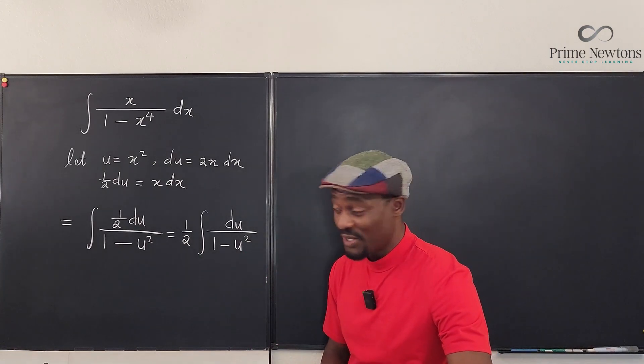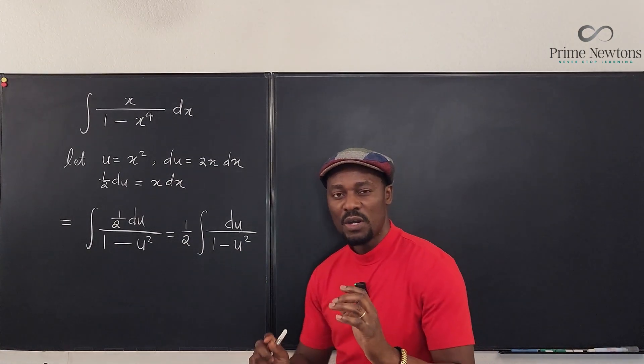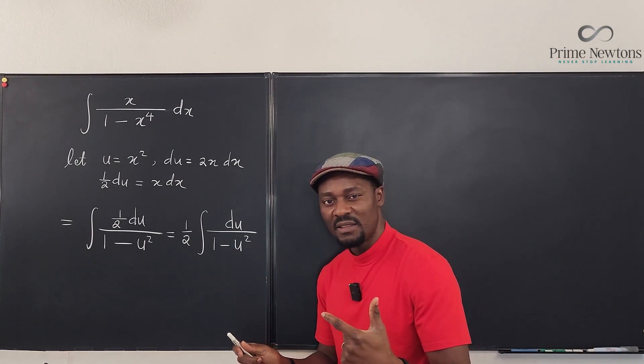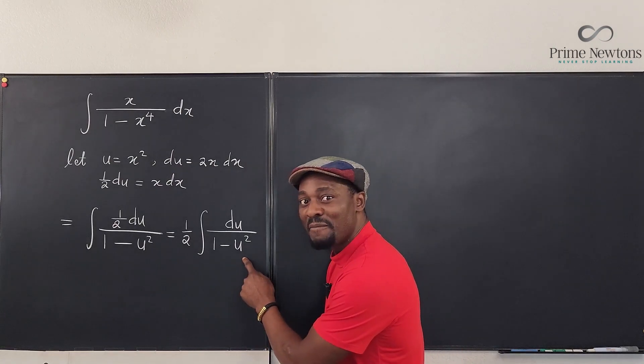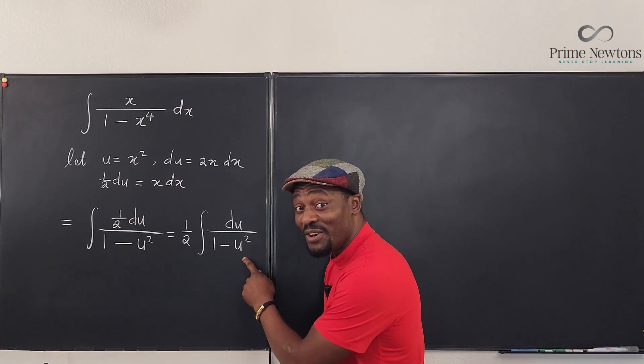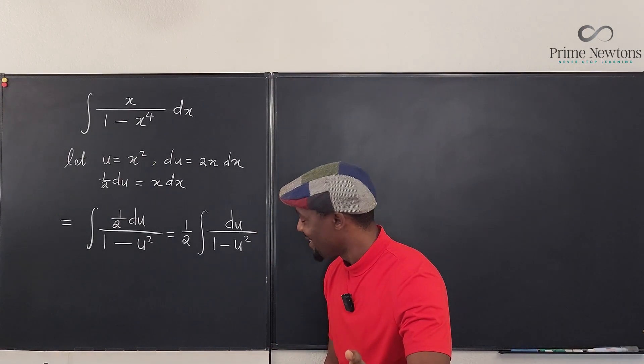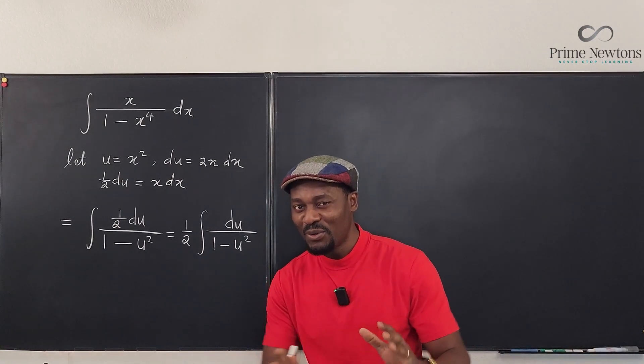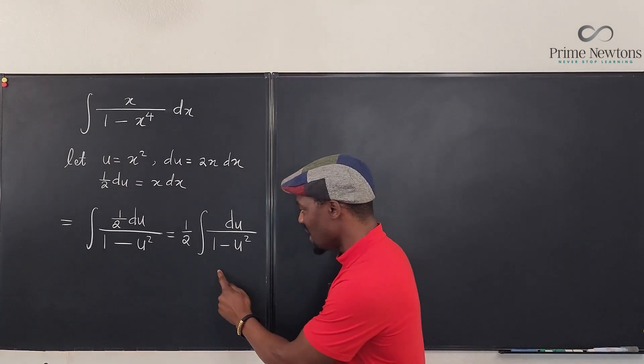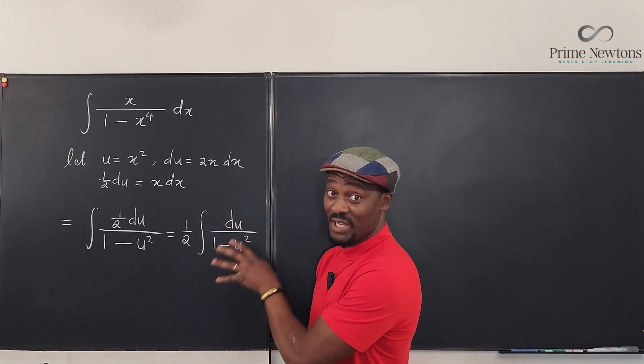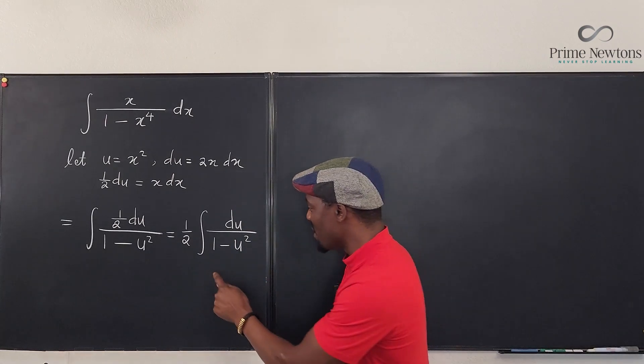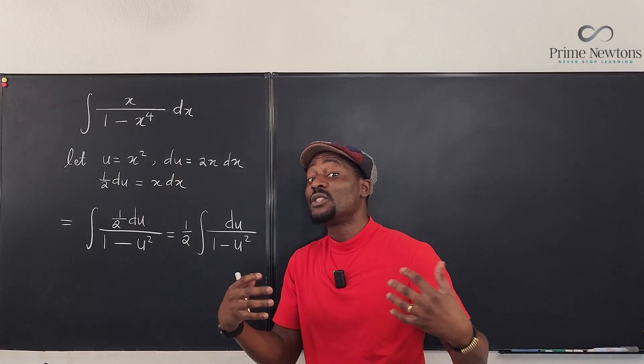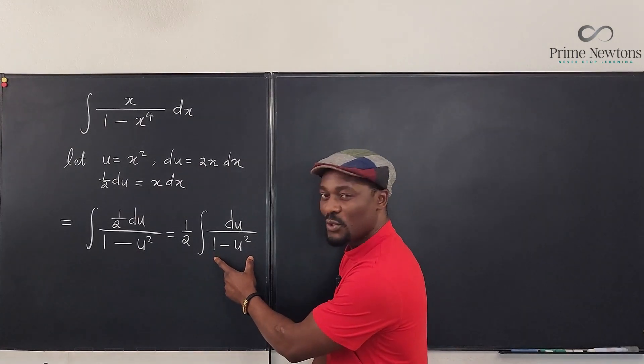Now a good calculus student begins to think: how do I integrate this? Do I do a trig substitution? What if I make u be sine theta? Remember you can only do that if you know it's going to make your life easier. Because there is no square root sign, whenever there is no square root you want to be careful when you do a trig substitution. So because this doesn't have a square root, don't do trig substitution.